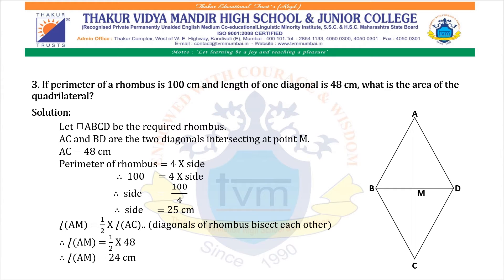Let quadrilateral ABCD be the required rhombus. AC and BD are the two diagonals intersecting at point M. AC = 48 cm. Perimeter of rhombus = 4 into side, so 100 = 4 into side. Therefore, side = 100 divided by 4 = 25 cm.